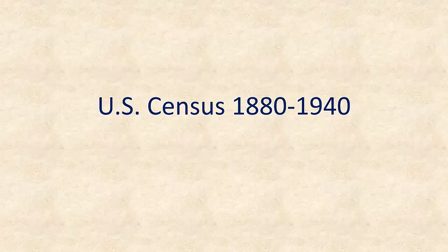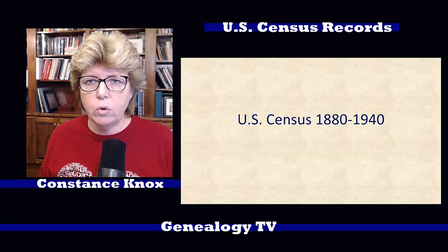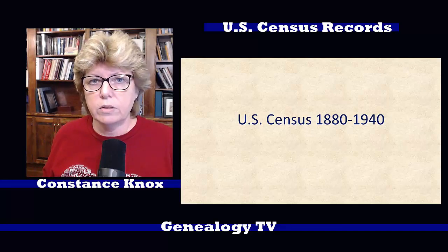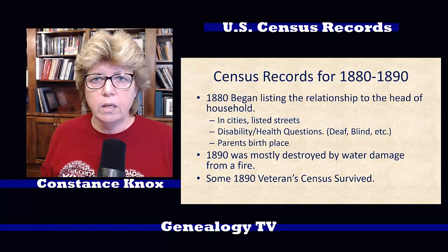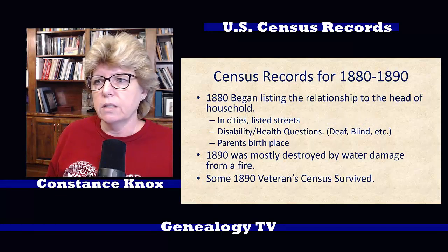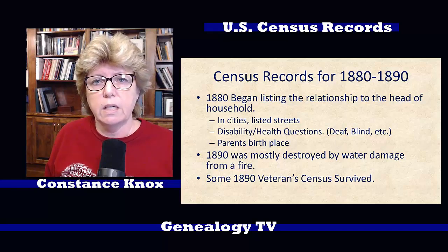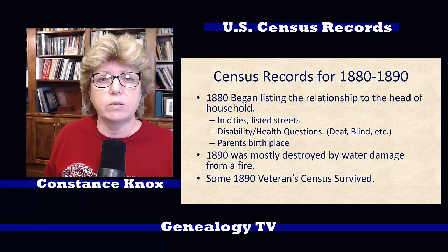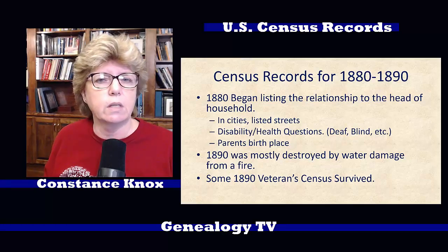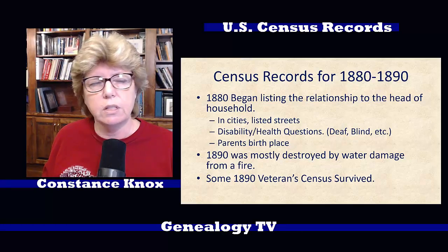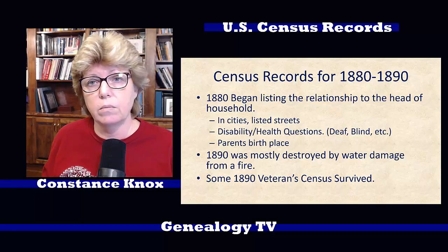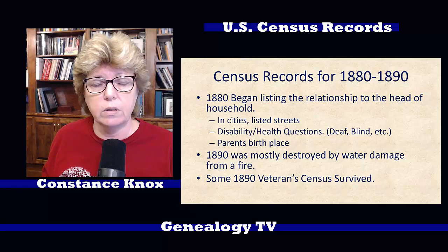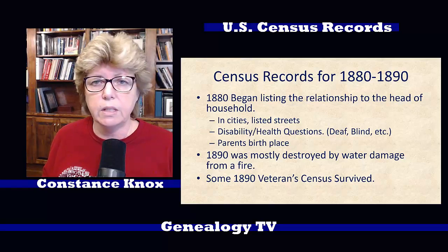Moving on to the 1880 and to the 1940 census — now we're moving into an era where there's a little bit more information. In 1880, they began listing the relationship to the head of household. In cities, they listed the streets, which was kind of cool. There are also health questions, usually in the form of disabilities, like are they deaf, are they blind — I've seen insane, idiotic — there's a variety of different labels that they used. And they've also started adding parents' birthplace, which is important.